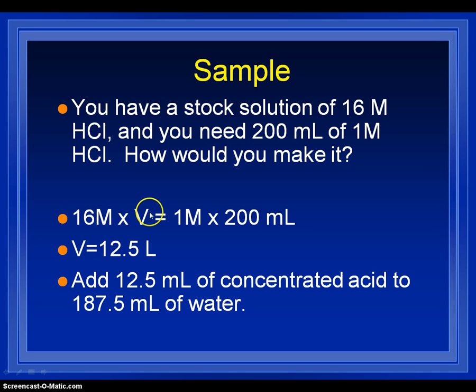We have molarity times volume is equal to molarity times volume. So, this right here is my final molarity and my final volume. So, I need 200 milliliters when all is said and done, and I need it to be 1 molar. And I start with 16 molar. So, if I just solve this out, 1 times 200 divided by 16, and I get that I need 12 and a half, and that's sorry, that should be milliliters here.